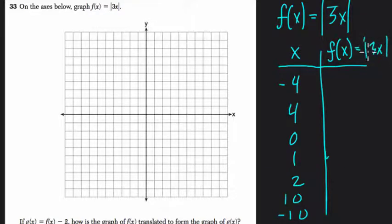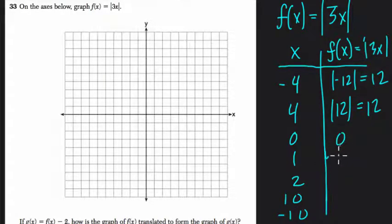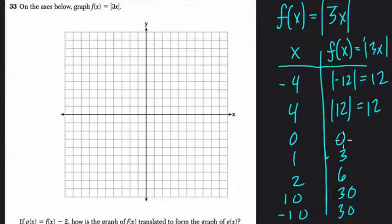So let's do that. We plug in negative four: three times negative four is negative twelve. The absolute value of that — the positive distance from zero — is twelve. Plug in four: three times four is twelve, the absolute value of twelve is still twelve. Plug in zero: three times zero is zero, absolute value of zero is zero. Three times one is three, absolute value is still three. Three times two is six, absolute value is still six. Ten times three is thirty, absolute value of thirty is thirty. Negative ten times three is negative thirty, absolute value of that is thirty.